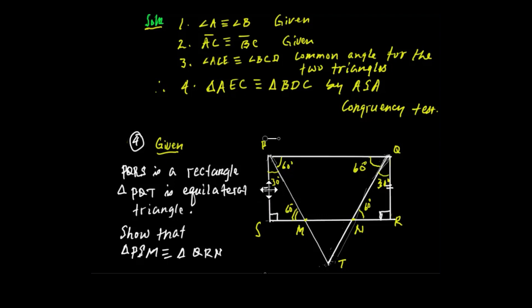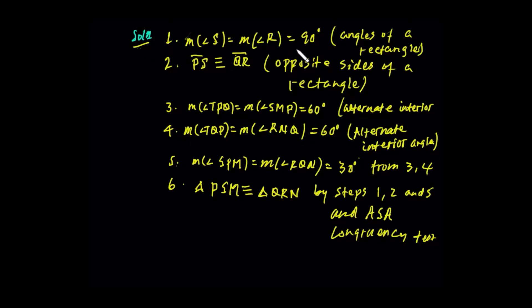Angle-angle-side, angle-angle-side — the two triangles are congruent. The right angle is 90 degrees, and the hypotenuse becomes congruent. By RHS — right angle, hypotenuse, side — the side is congruent. Therefore the triangles are congruent by angle-side-angle.